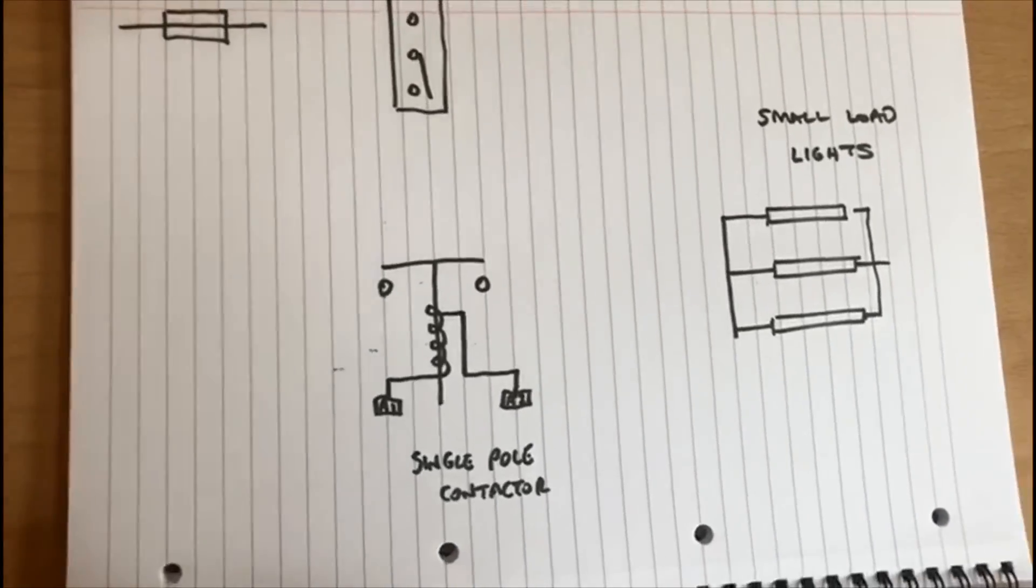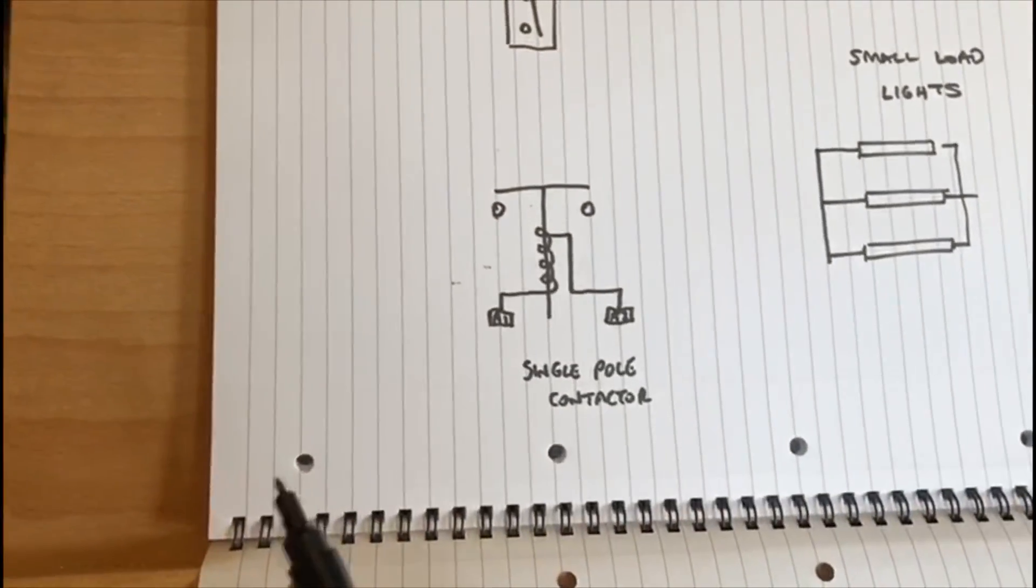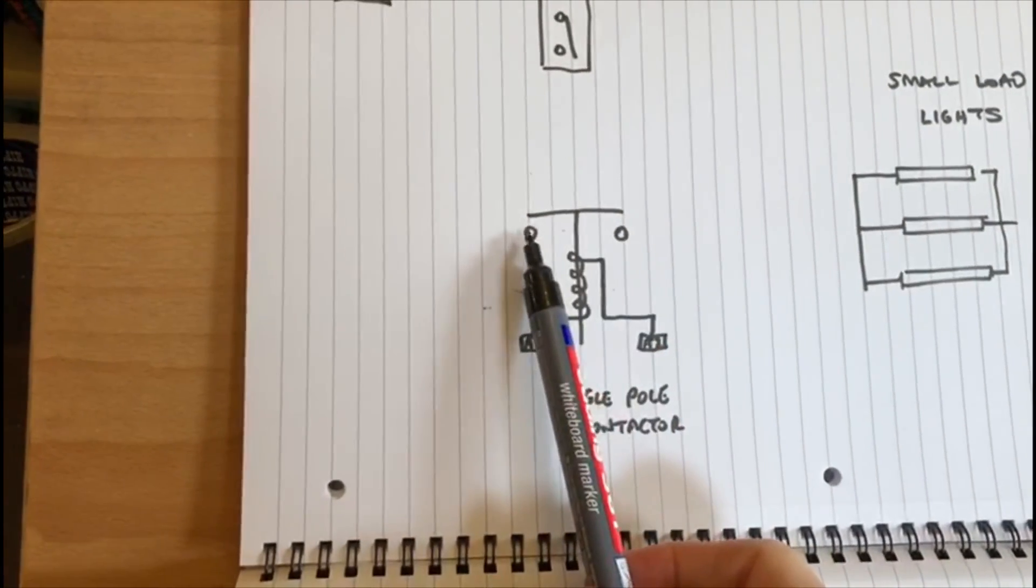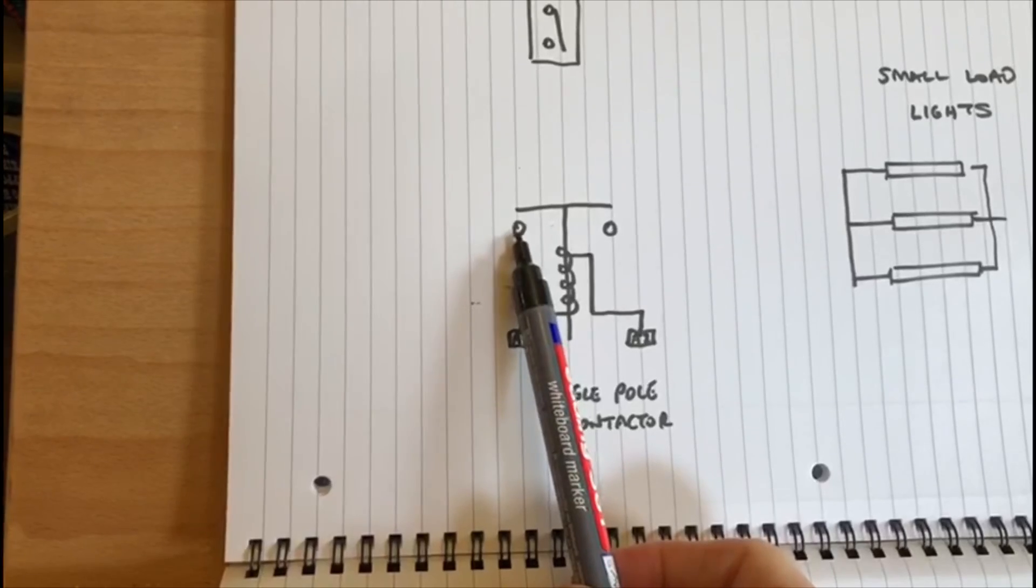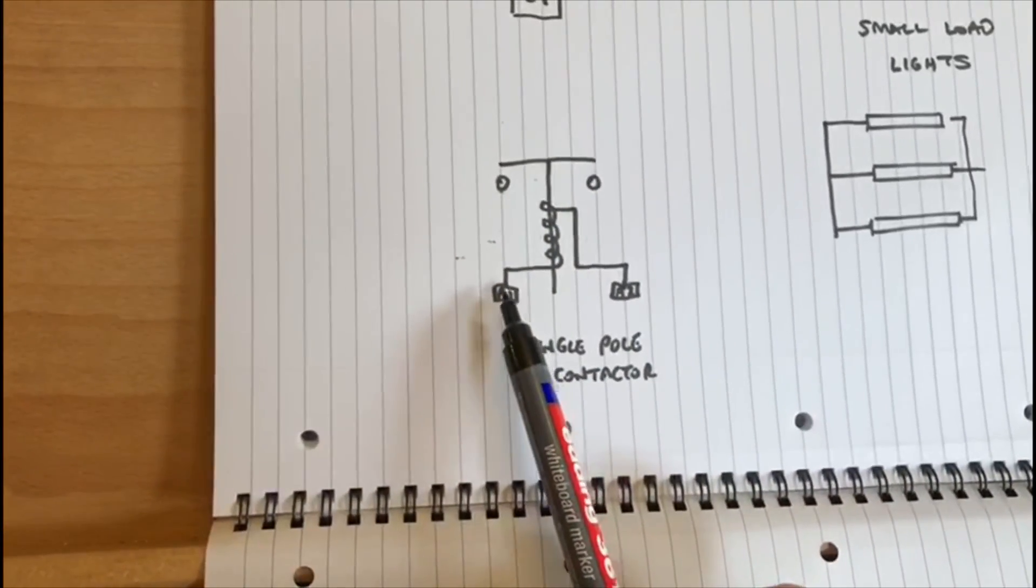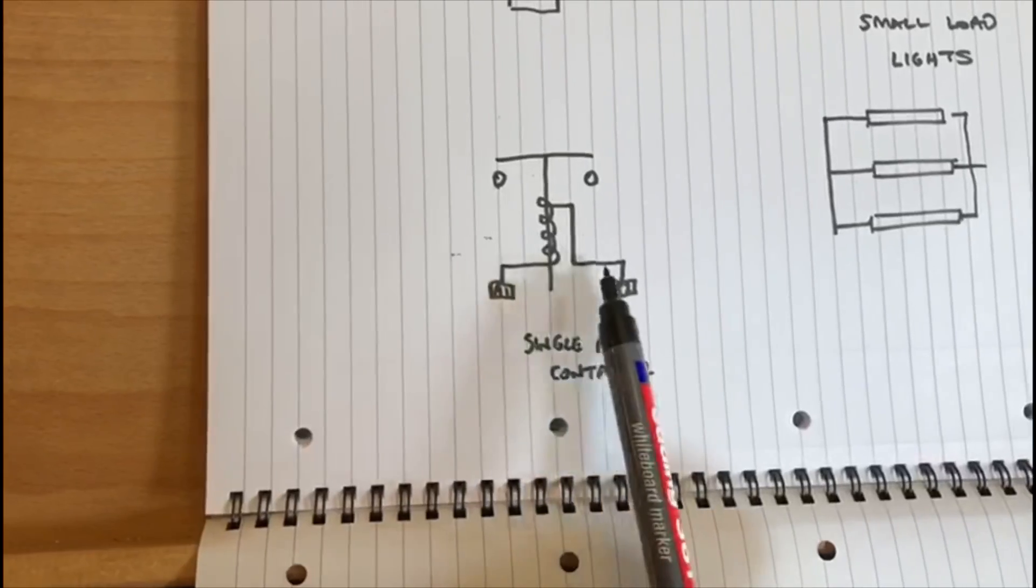Again, we're not going to go into the detail of how the contactor works, but we do need to be aware that there's two terminations here. So if it's a single pole, these would be labeled up as terminals number one and number two. Then we've got the coil connections, and again they would be A1 and A2.